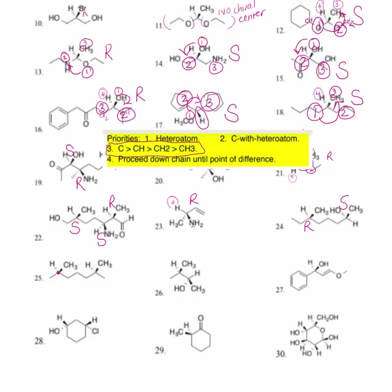Number twenty-five: I have two methyl groups on this carbon, so that is not a chiral center. Same with the other — not a chiral center because we have two methyl groups. So on number twenty-five there's nothing to name in terms of stereochemistry. Counting the chain: one, two, three, four, five, six, seven — this would be 2,6-dimethylheptane, and there is no stereochemistry to name.